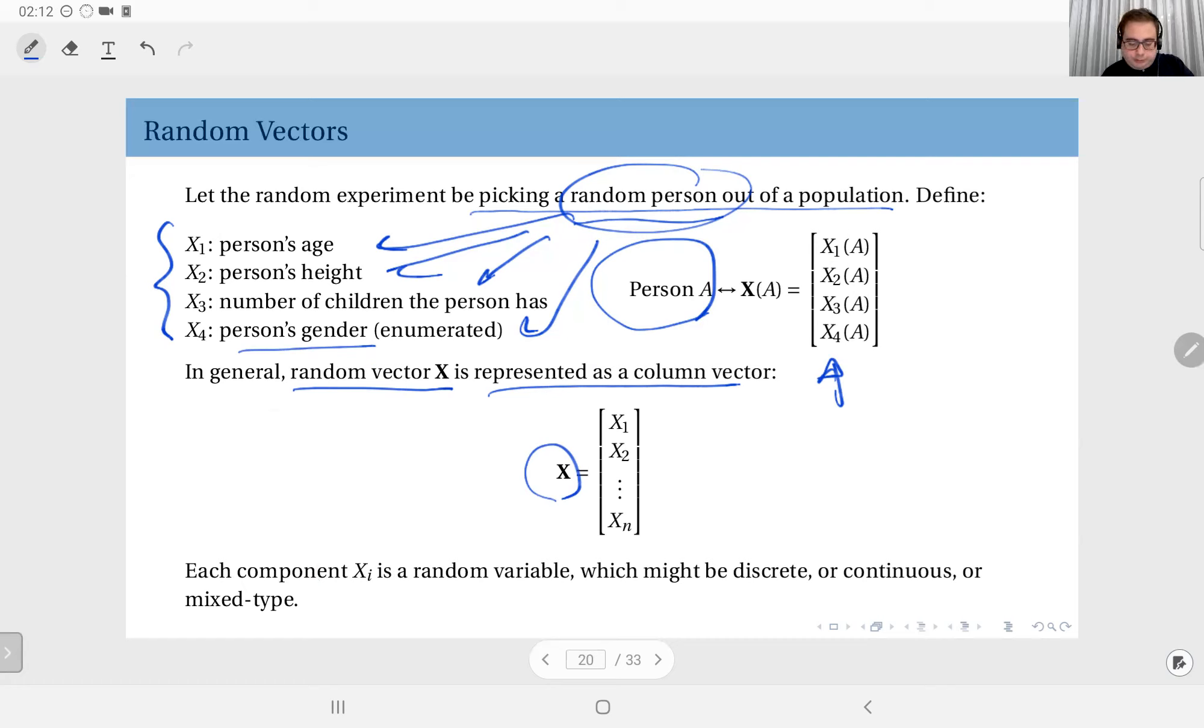Each component X sub i here is a random variable, and therefore they might be discrete, they might be continuous, they might be mixed type. The vector itself may not be the same type all throughout. They might have different types, different properties, different distributions obviously, and we will talk about their joint distributions and their relations.